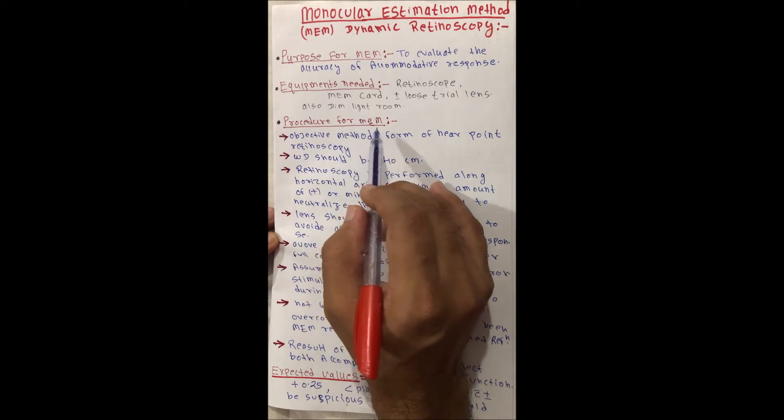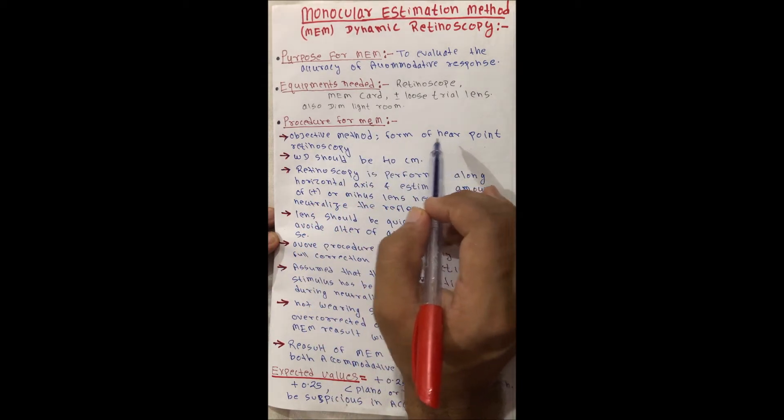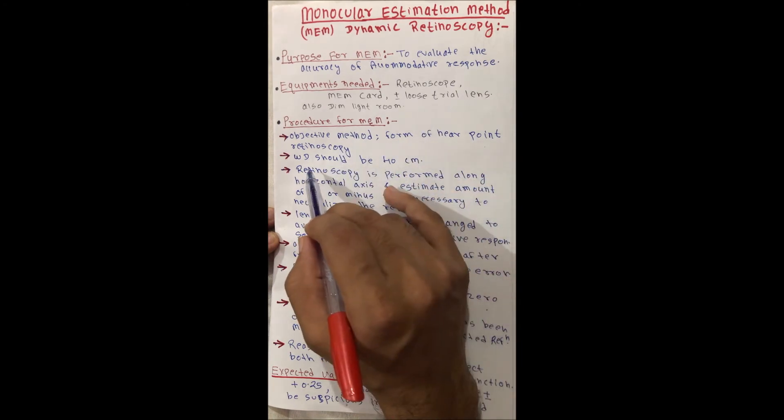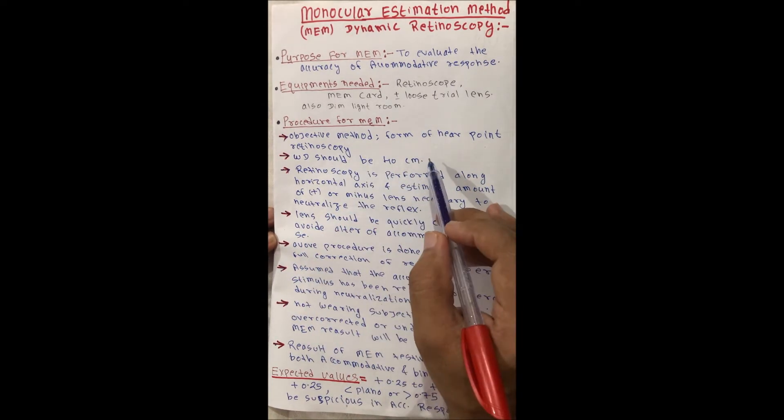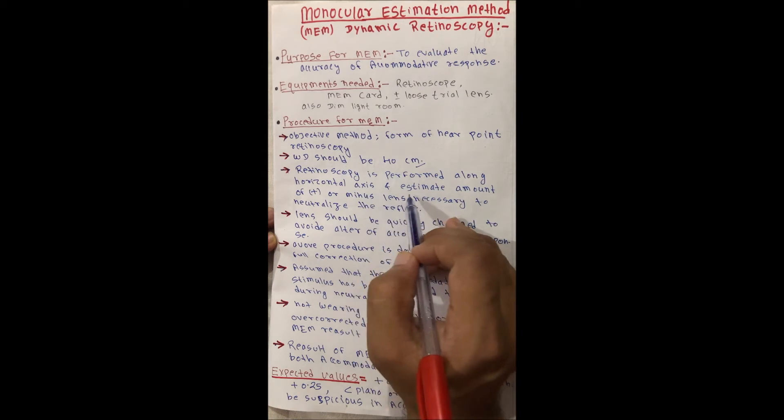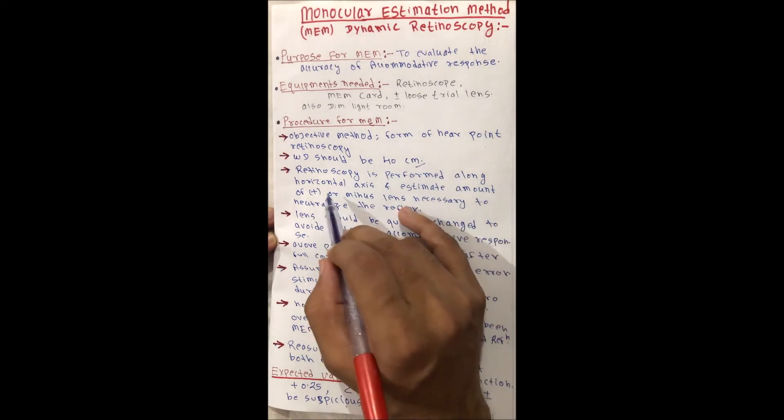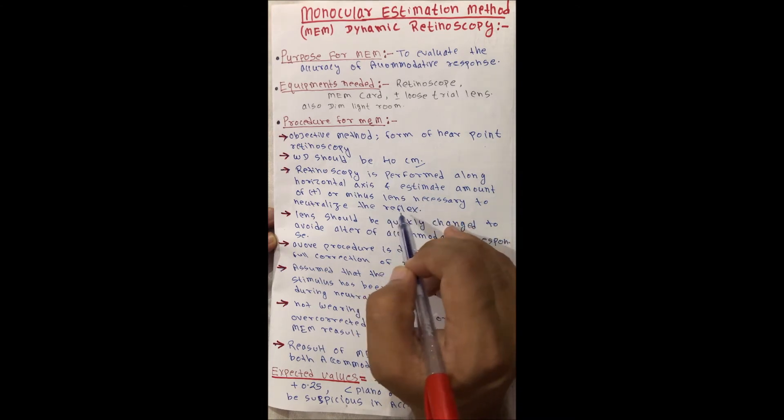Procedure for MEM: it is the objective method form of near-point retinoscopy. Working distance should be 40 centimeters. Retinoscopy is performed along horizontal axis and estimate amount of plus or minus lens necessary to neutralize the reflex.